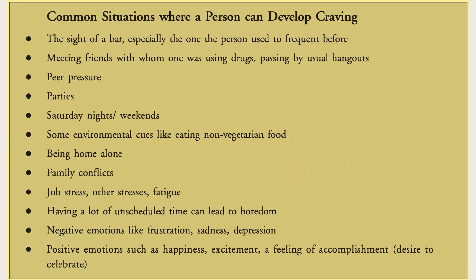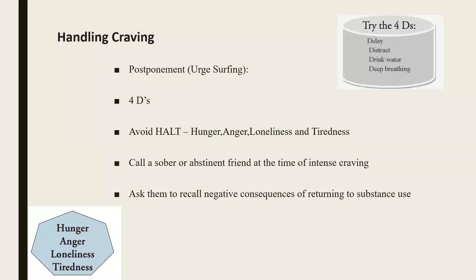Common situations where a person can develop craving include the sight of a bar (especially one they used to frequent), meeting friends with whom they previously used drugs, passing by usual hangouts, peer pressure, parties, Saturday nights or weekends, environmental cues like eating non-vegetarian food, being home alone, family conflicts, job stress, having a lot of unscheduled time, negative emotions like frustration, sadness, or depression, and positive emotions such as happiness, excitement, or overconfidence.